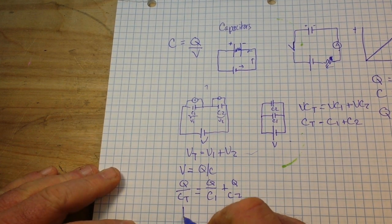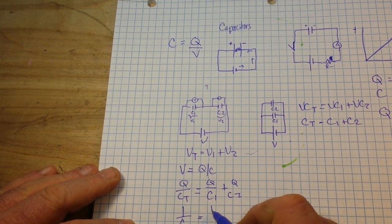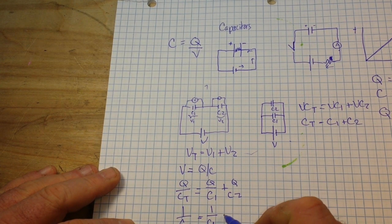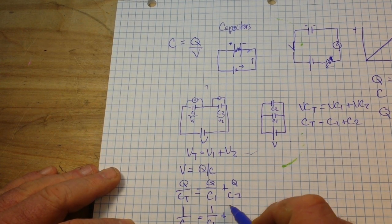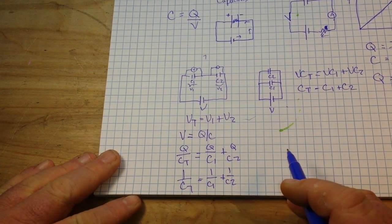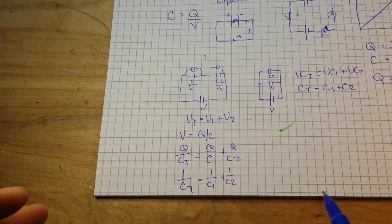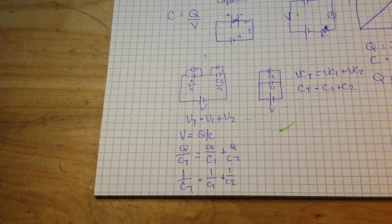And, therefore, 1 over C total equals 1 over C1 plus 1 over C2. Does that make sense? If it doesn't, let me know in the description and I'll try and get more into it.